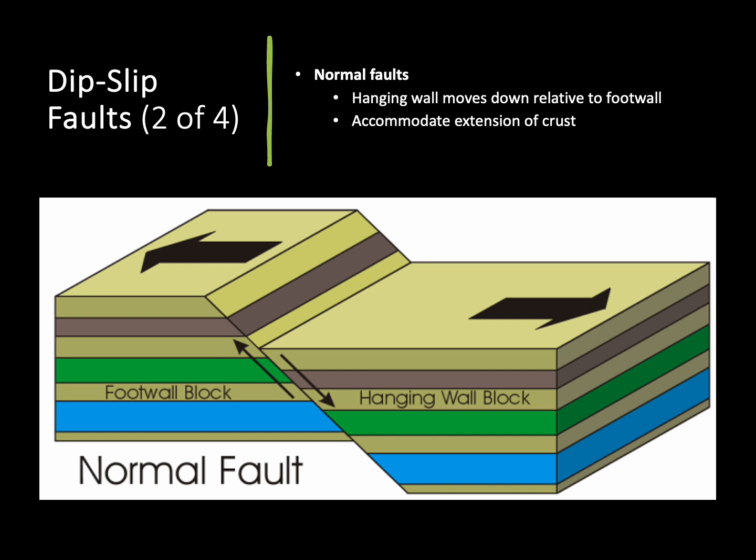If we have it so that our hanging wall is moving down and our foot wall looks like it's moving up, this is called a normal fault. This happens due to extension when we're pulling these broken pieces out in two different directions.